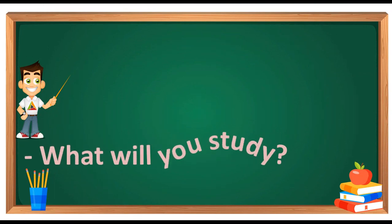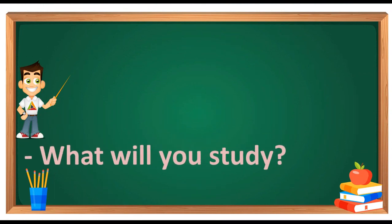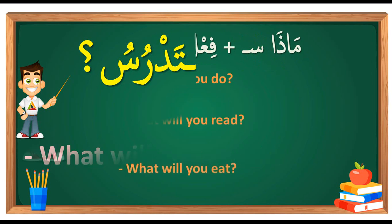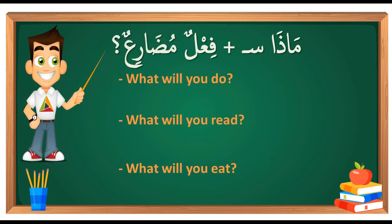How to say 'what will you study?' — it's so easy. We say 'mada satadrusu.' 'Mada' means 'what,' 'sa' means 'will,' and 'tadrusu' means 'you study.' So all you need is 'mada,' then 'sa,' and then the present tense verb. The 'sa' prefix is what indicates the future.